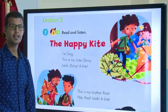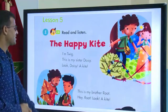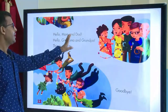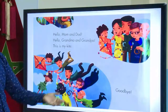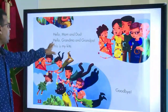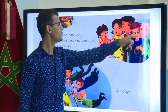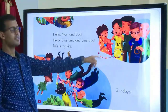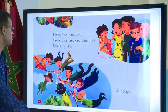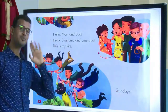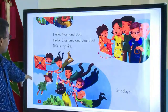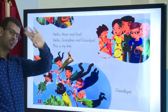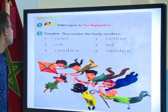Hey Roots, look — a kite! Let us move to paragraph number three: Hello, mom and dad! This is mom and this is dad. Hello, grandma and grandpa! This is my kite. And goodbye — they are happy. Good job!